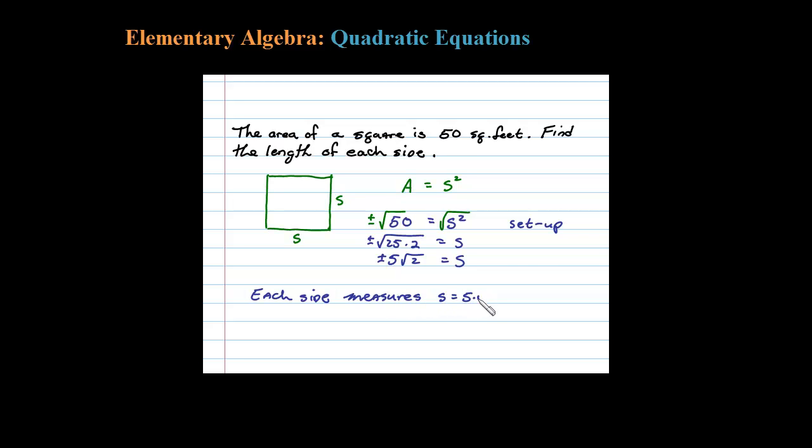So then each side measures five times the square root of 2 feet. Now if you wanted us to give an approximate answer, that would be approximately equal to 7.07 feet, rounded off to the nearest hundredth.